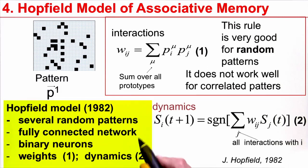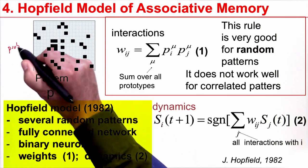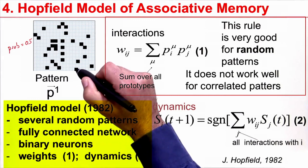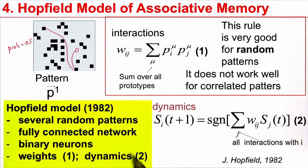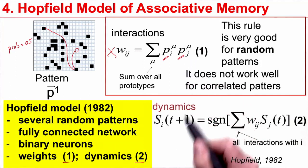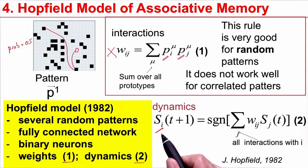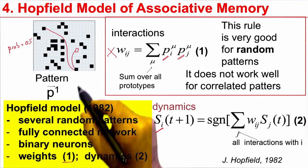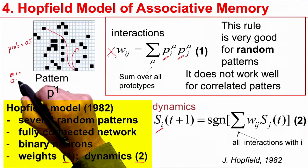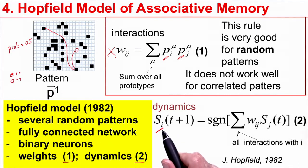This leads to the Hopfield model. I can store several random patterns. The probability that I have a black pixel is 50%, probability 0.5. I have a fully connected network, which means each pixel connects to all other pixels, even if they are far away. I have this rule for storing the weights, rule number one. And I have a dynamics. I have to distinguish between the patterns I would like to store, that's in the weights. These prototype patterns have the index p. And I distinguish this from the momentary state, which is the state variable si. It can only take two values, plus one or minus one. I have binary neurons.